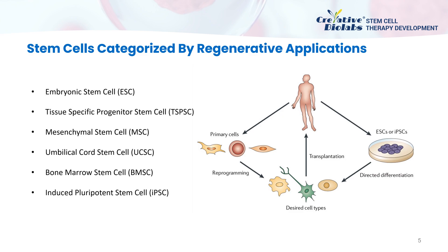Based on regenerative applications, stem cells can be categorized as embryonic stem cells (ESCs), tissue-specific progenitor stem cells (TSPSCs), mesenchymal stem cells (MSCs), umbilical cord stem cells (UCSCs), bone marrow stem cells (BMSCs), and induced pluripotent stem cells (iPSCs). ESCs are from the inner cell mass of a pre-implantation embryo, which can be obtained from in vitro fertilization or nuclear transfer. Tissue-specific progenitor stem cells, mesenchymal stem cells, umbilical cord stem cells, and bone marrow stem cells are from adult tissues. iPSCs are artificially generated from somatic cells through reprogramming.